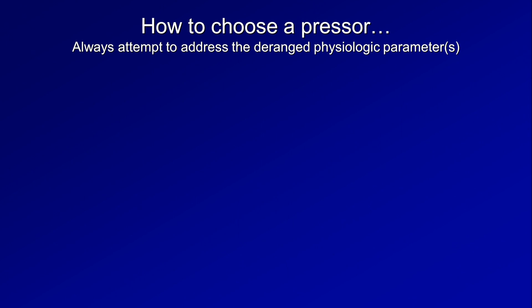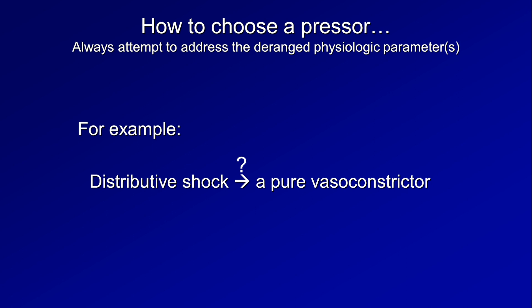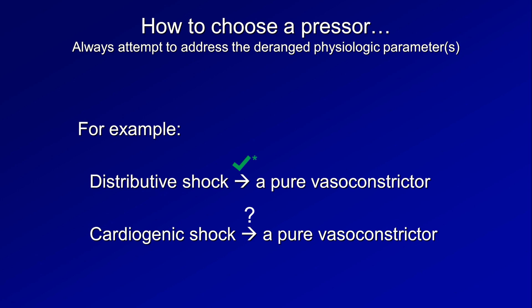Moving to clinical use — how does one choose a pressor? The most fundamental principle is to always attempt to address the deranged physiological parameter. For example, in a patient with pure distributive shock, a pure vasoconstrictor seems appropriate. For a patient in cardiogenic shock, a pure vasoconstrictor is absolutely not a good idea.